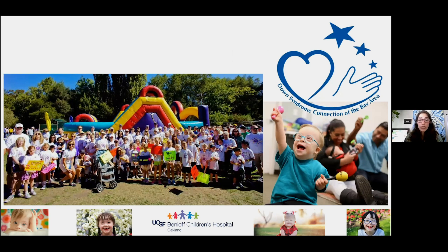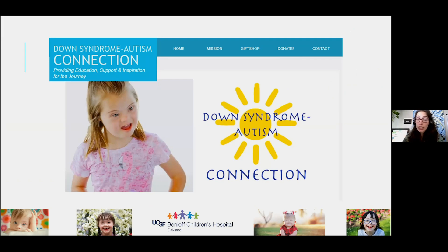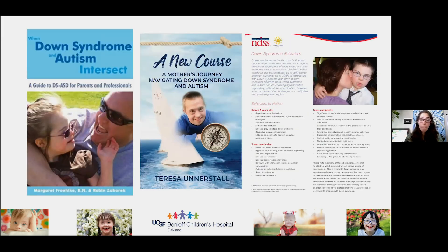I want to call out some helpful support organizations. The Down Syndrome Connection of the Bay Area is an amazing organization with specific supports for people with a dual diagnosis, including consultation with a Down Syndrome Autism specialist, support with augmentative communication, and a series of amazing webinars on the dual diagnosis. The Down Syndrome Autism Connection is a closed online national support group for families of children with a dual diagnosis. There are also books available: When Down Syndrome and Autism Intersect, and a newer book, Mother's Journey Navigating Down Syndrome and Autism by Teresa Anerstal.